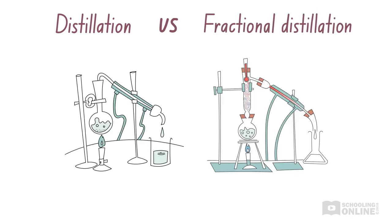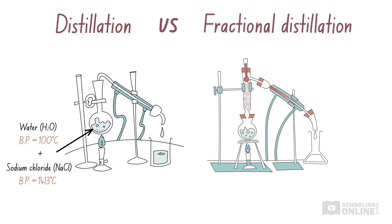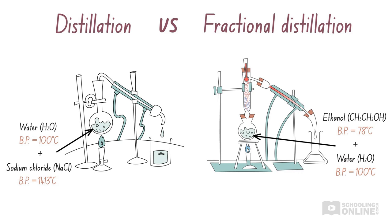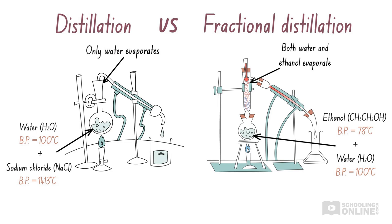Now let's pause here to compare the separation techniques of distillation and fractional distillation. In the previous video, Blackbeard used distillation to separate seawater, which is a mixture of salt and water. In this lesson, we saw how fractional distillation can be used to separate a mixture of ethanol and water. When Blackbeard heated up the seawater, only the water evaporated, because water has a much lower boiling point than salt — therefore, the salt remained in the original container. On the other hand, when we heated the mixture of ethanol and water, both of them turned into a gas and climbed the fractionating column. This is because ethanol and water have similar boiling points.